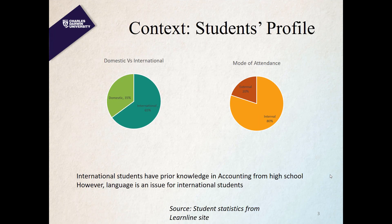Let's look at the student profile and context before we propose the assessment items. The domestic students are 35% and international students are 65%, because out of three campuses, two campuses — the City campus and Melbourne campus — all students are international. Only the Darwin Waterfront campus has both domestic and international students. Most international students major in accounting and are assumed to have prior knowledge in accounting.